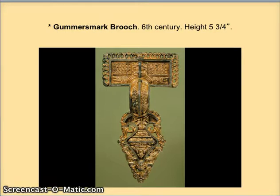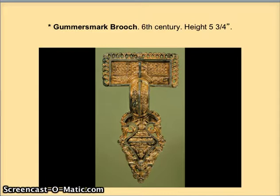Here are some points to remember about the animal style: these pieces tend to be symmetrical. They show the animals in profile or looking at them from above. One really interesting fact is that they often show the bones and skeletons of the animal — the ribs will be protruding, or the shoulders will be really sticking out as if seen in profile. This is a Norse brooch called the Gummersmark brooch.